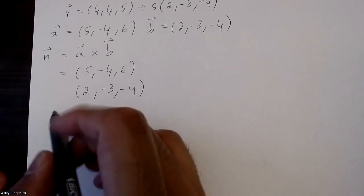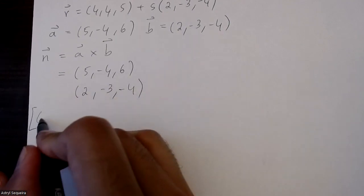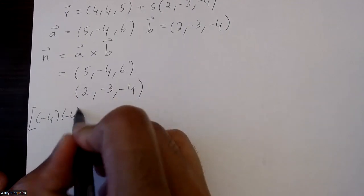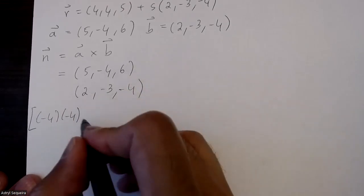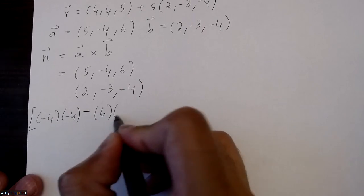So now I'll cross multiply these two vectors over here. So my x component is negative 4 times negative 4, this times this, minus 6 times negative 3.